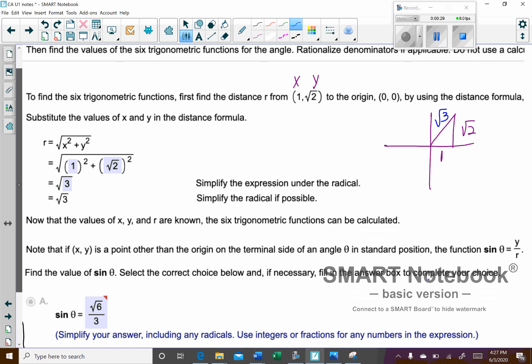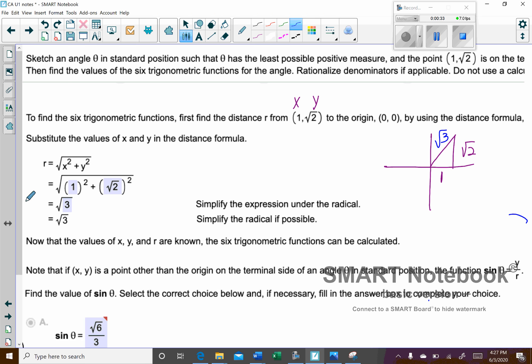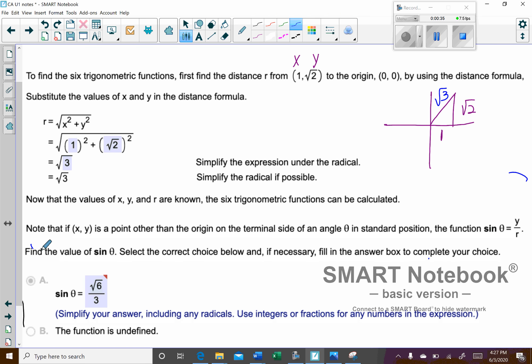And so you can see that sine of theta is going to be y over r. So sine of theta is square root of two over the square root of three. And what we're going to do here is we're going to have to rationalize this. What that basically means is you can't have a radical in the denominator spot.